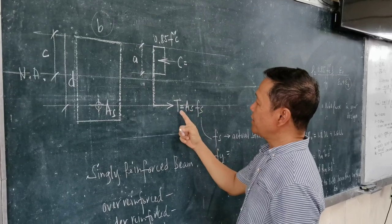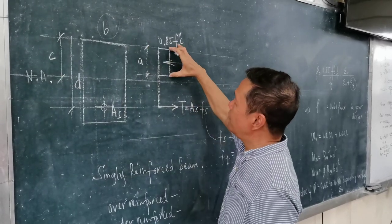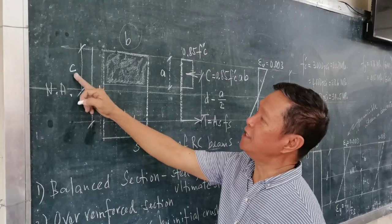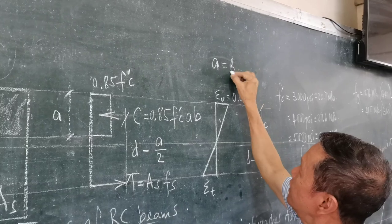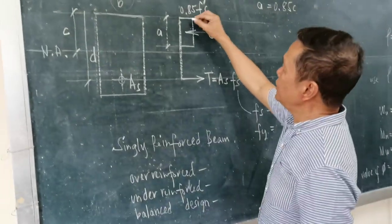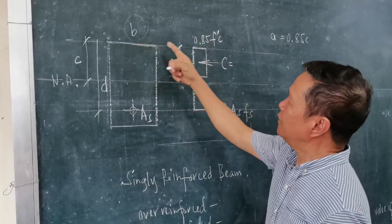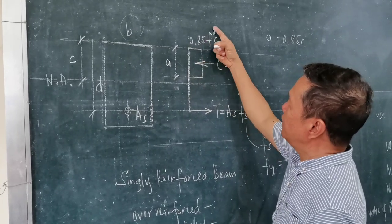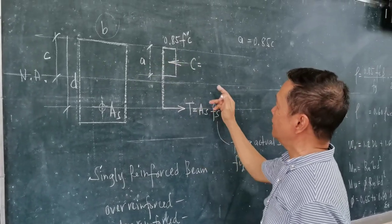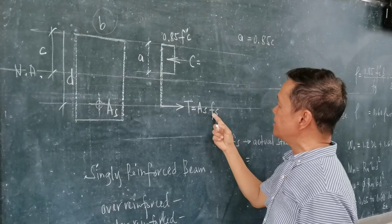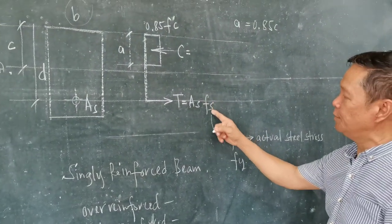It is denoted as capital letter D. You notice that c is greater than a, the depth of the rectangular stress block. And the relationship of c and a is using this formula: a is equal to beta times c. And this dimension of the compression block always has the allowable compressive stress in the extreme fiber under compression, which is 0.85 of F prime c. So we have two forces here. T is always equal to the area of steel times the stress in the steel, which is the actual stress F sub s.